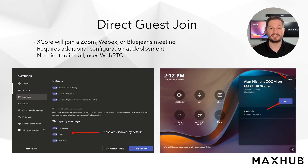Enabling this feature requires changing the Process External Meetings flag to True for each room account. Detailed guidance on configuring Direct Guest Join within your organization can be found in the Microsoft documentation for Direct Guest Join.